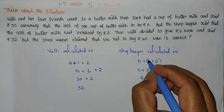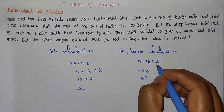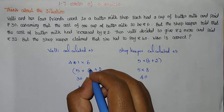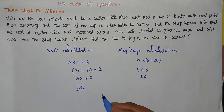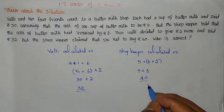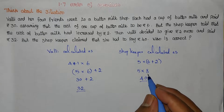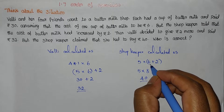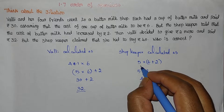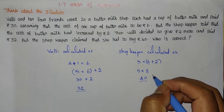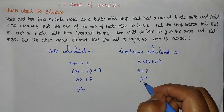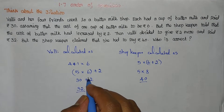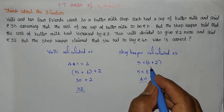The shopkeeper calculated 2 rupees extra, making the cost 8 rupees. 5 members into 8 rupees equals 40 rupees. Wally's calculation with brackets gives 32 rupees, while the shopkeeper's gives 40 rupees. Brackets play an important role — the expression value will vary depending on the bracket positions.